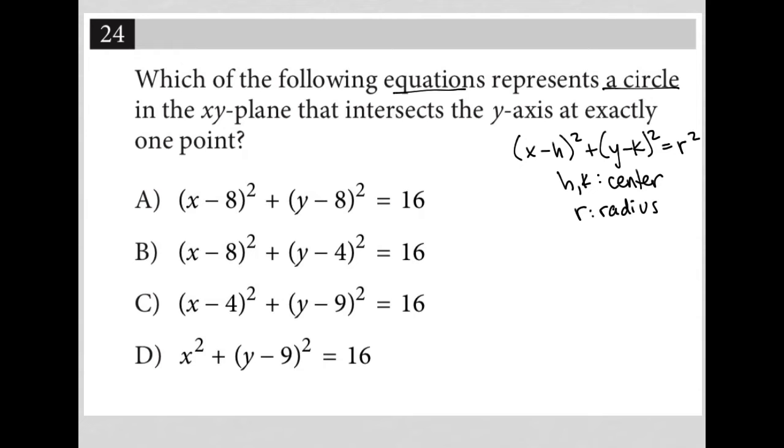For instance, for choice A, the center would be (8, 8), and the radius would be 4. r equals 4 because 4² equals 16. The radius for B is also 4, for C is also 4, and for D is also 4.